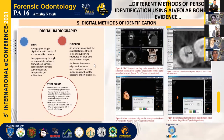The fifth method of forensic identification is the digital method, wherein soft copies of radiographs are used for analysis.